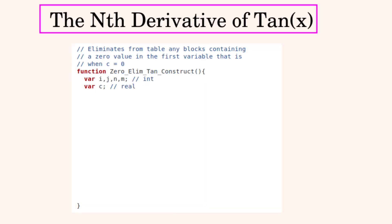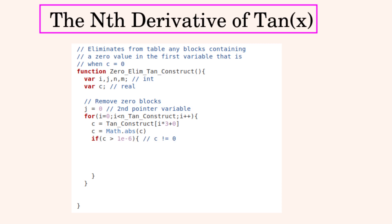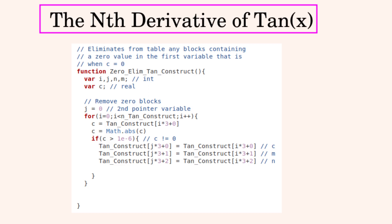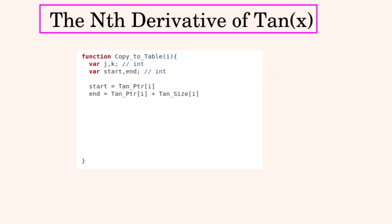Now to create the zero-eliminate function, which is the second simplification function. We make a loop to remove all zero terms by getting each term's coefficient and checking if its absolute value is greater than a threshold (meaning it isn't zero). We copy non-zero terms over zero terms so that all non-zero terms shift forward, eliminating the zeros. One indexing variable lags behind the other to accomplish this. The new length of the expression is shorter and must be written to the corresponding global variable.